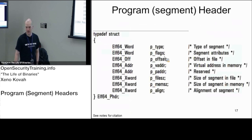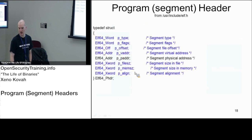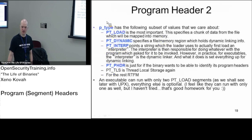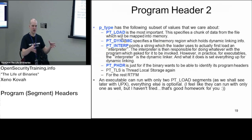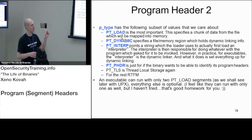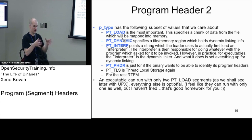Drilling down into program headers, here's what an individual program header looks like. The p_type is the most important field. The most important type is PT_LOAD — this defines a segment. Program headers define segments, which are chunks of the file. Only when a program header defines a PT_LOAD segment does that chunk actually get mapped into memory, where the OS loader puts it so the program can execute from there later.